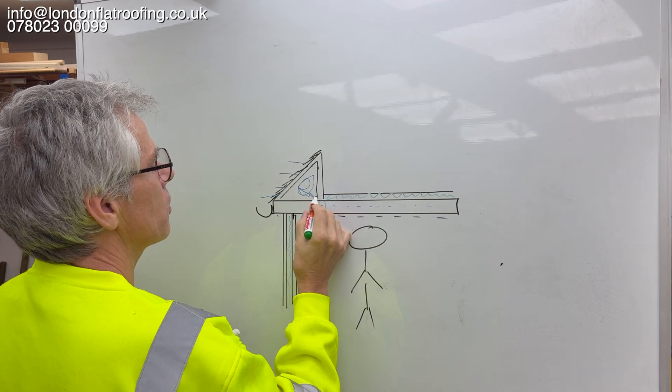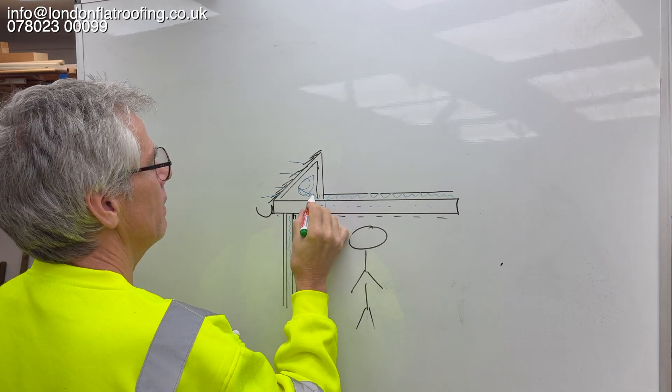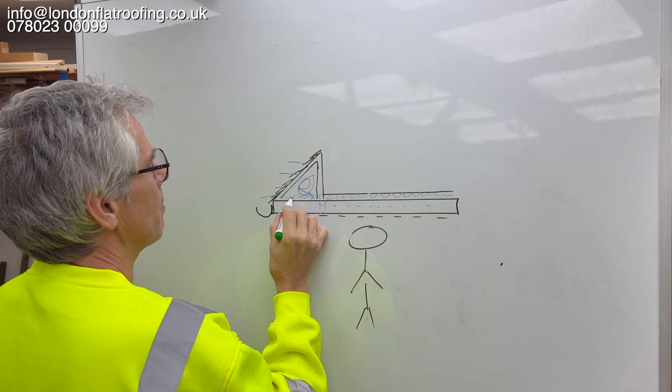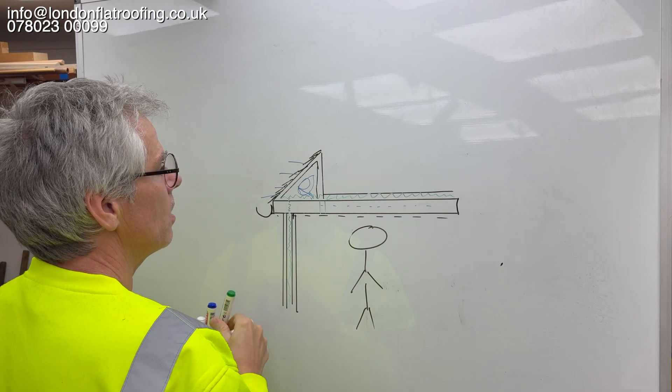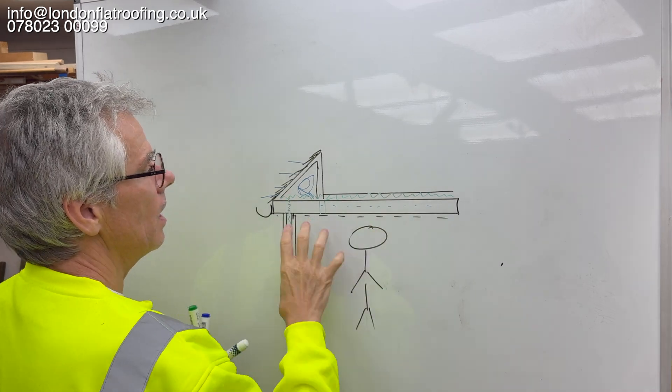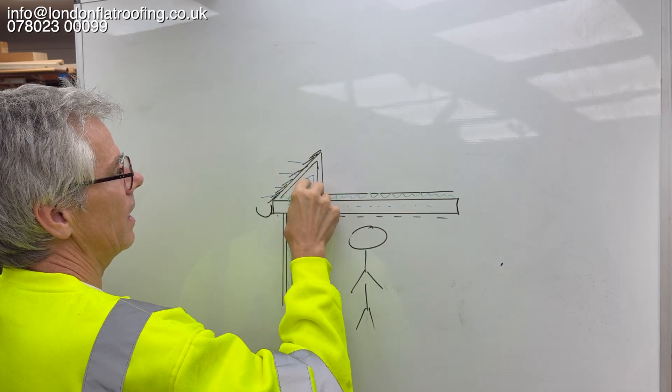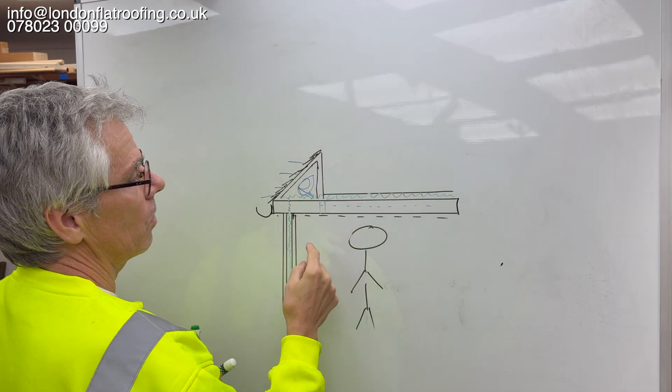So that insulation should have gone underneath there like so, right the way across. So this insulation could have gone up there, and then you've got a continuous across and down, and then you're nice and thermally warm underneath it with that flow of air coming through there and any other venting on the top.